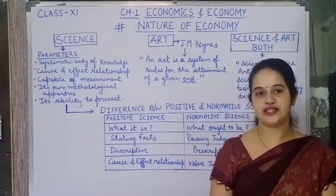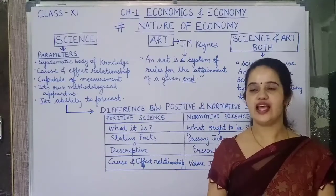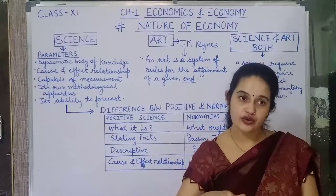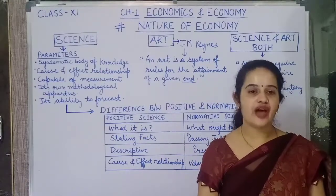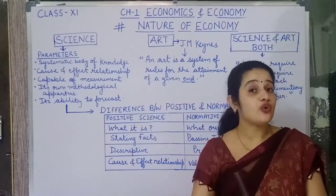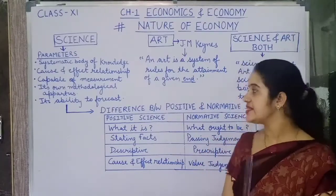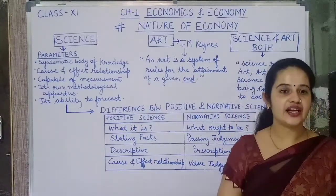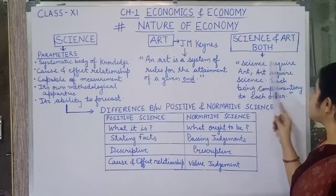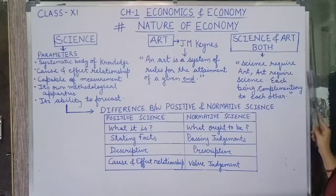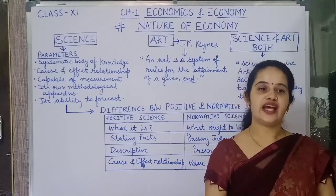Relating this to economics: we not only study economics but also examine it. For example, unemployment in India is X percentage, but we also find out how to drop it to Y percentage. So economics is not just the study of facts — we also try to get some judgments and values out of it. Getting judgments or values out of it is called an art. Hence, economics is both science and art. Science requires art, art requires science, and each is complementary to the other.